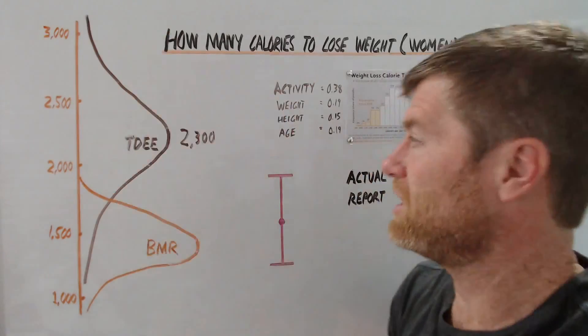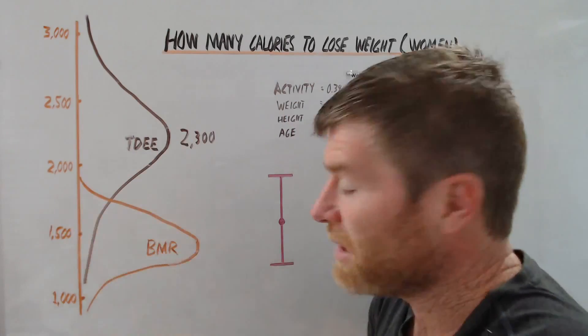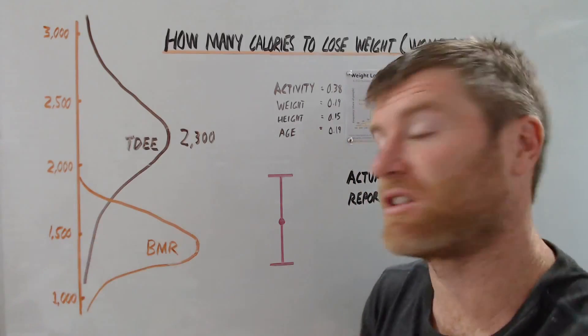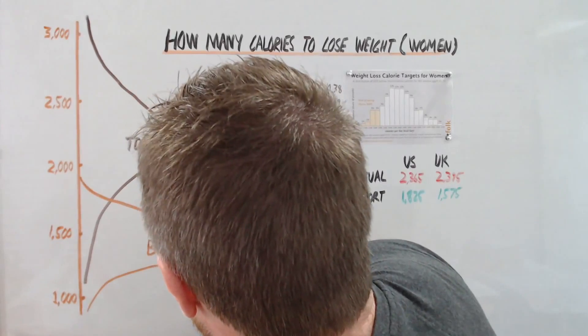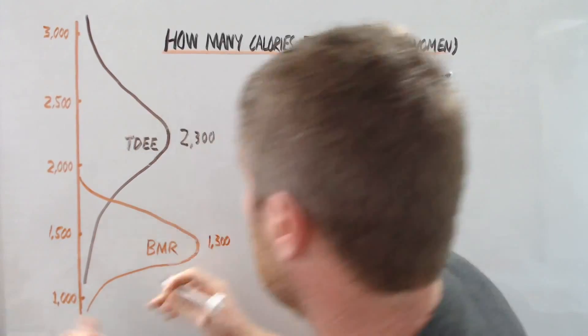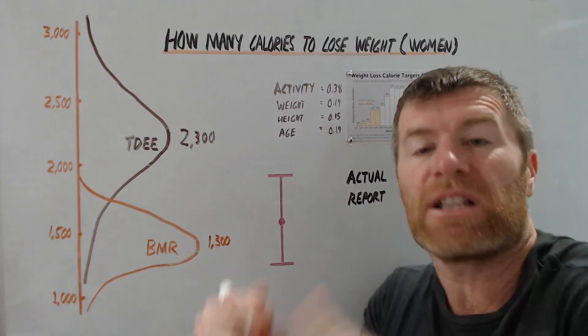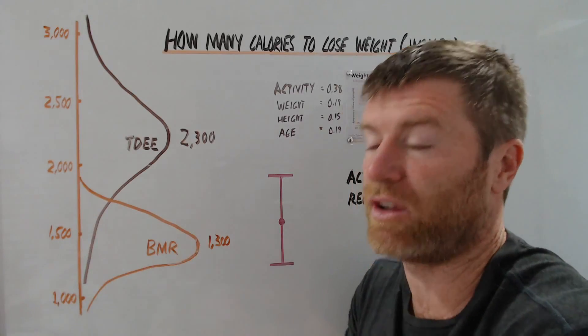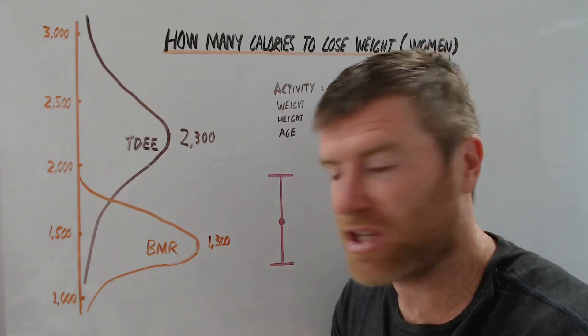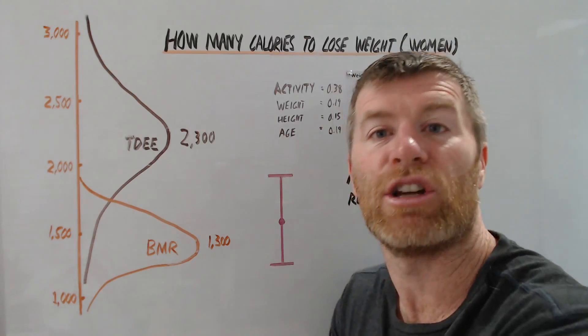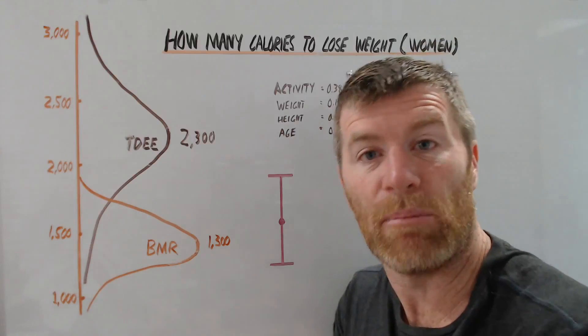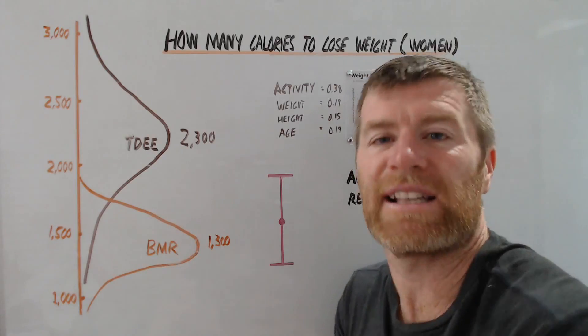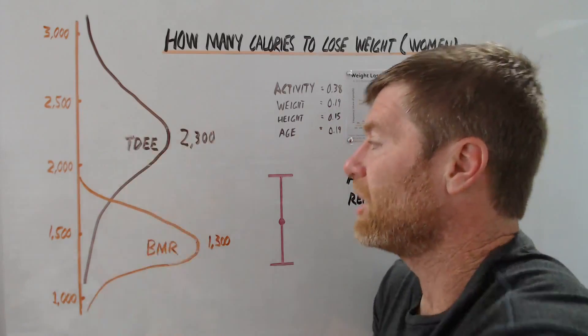The basal metabolic rate, this is how much energy the average woman uses just to survive. And this is closer to 1,300 and the distribution is much tighter. So typically, you would expect that somewhere between 1,300, what a woman needs just for her basic functioning, what her heart and her liver and her muscles use just without moving in the day, somewhere between 1,300 and 2,300, you might expect is where the range might fall out.